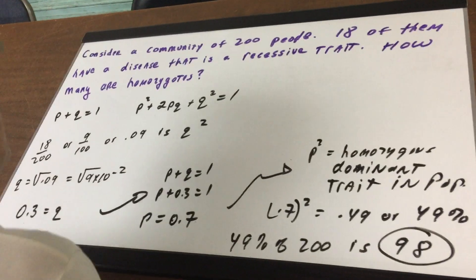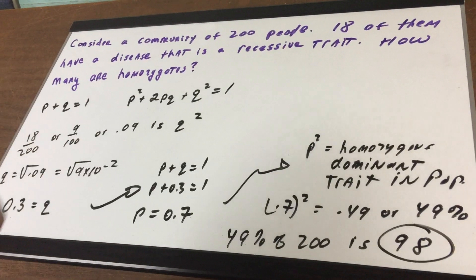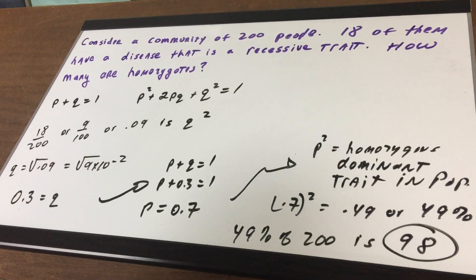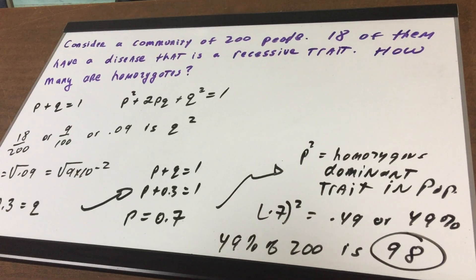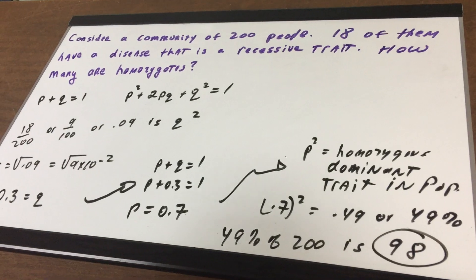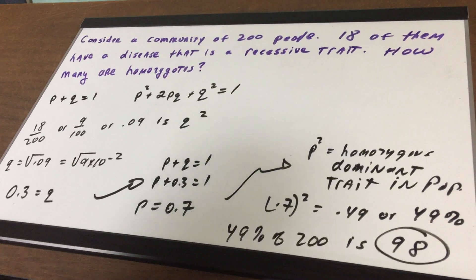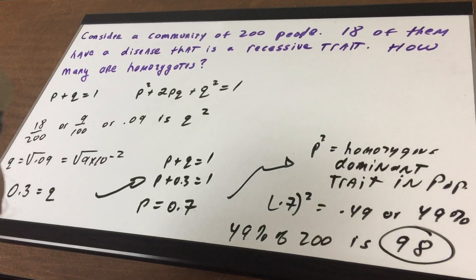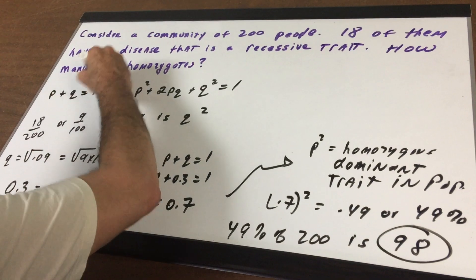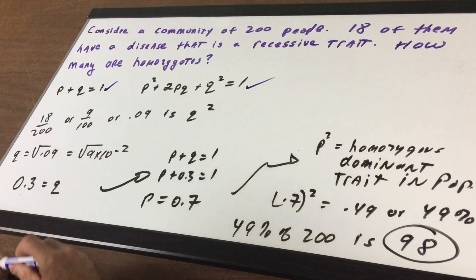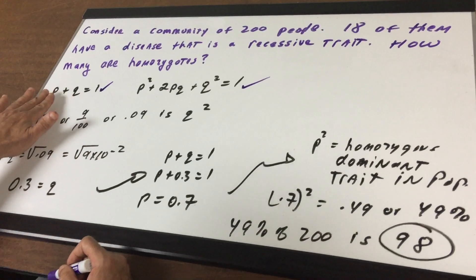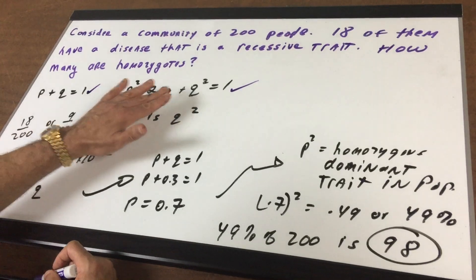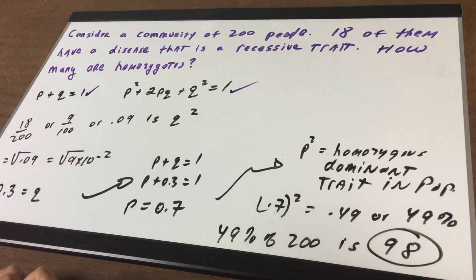Consider a community of 200 people. 18 of them have a disease that is a recessive trait. How many would be homozygous or homozygotes? Now the first thing I do is I write my two Hardy-Weinberg equations: P plus Q is 1, and P squared plus 2PQ plus Q squared is 1.